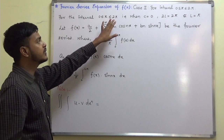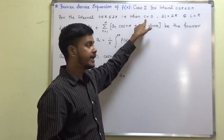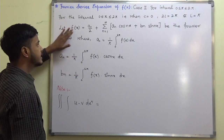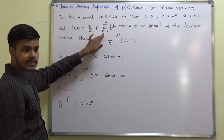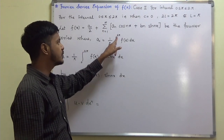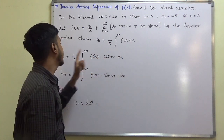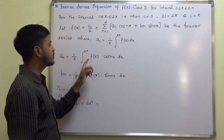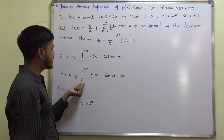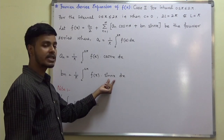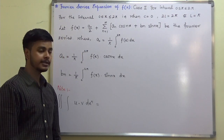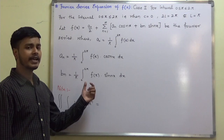For the interval 0 to 2π, that is when c is equal to 0 and 2l is equal to 2π, we have this Fourier series. Here a₀ is 1 by π times the integral from 0 to 2π of f of x dx, and aₙ is 1 by π times the integral from 0 to 2π of f of x into cos nx dx.